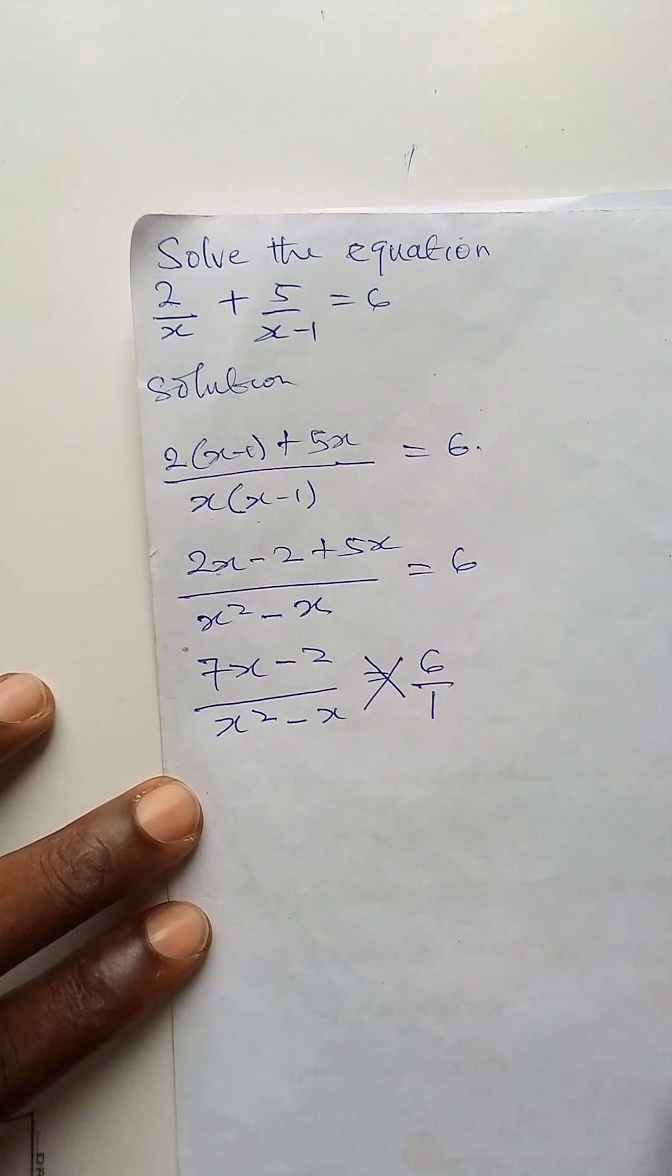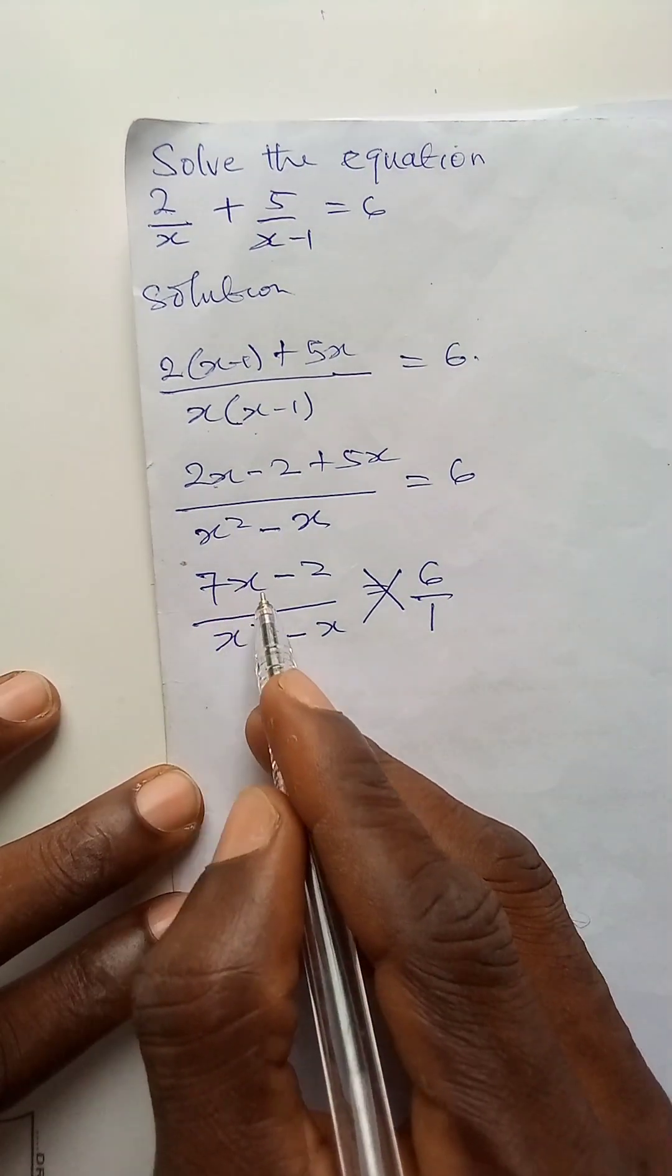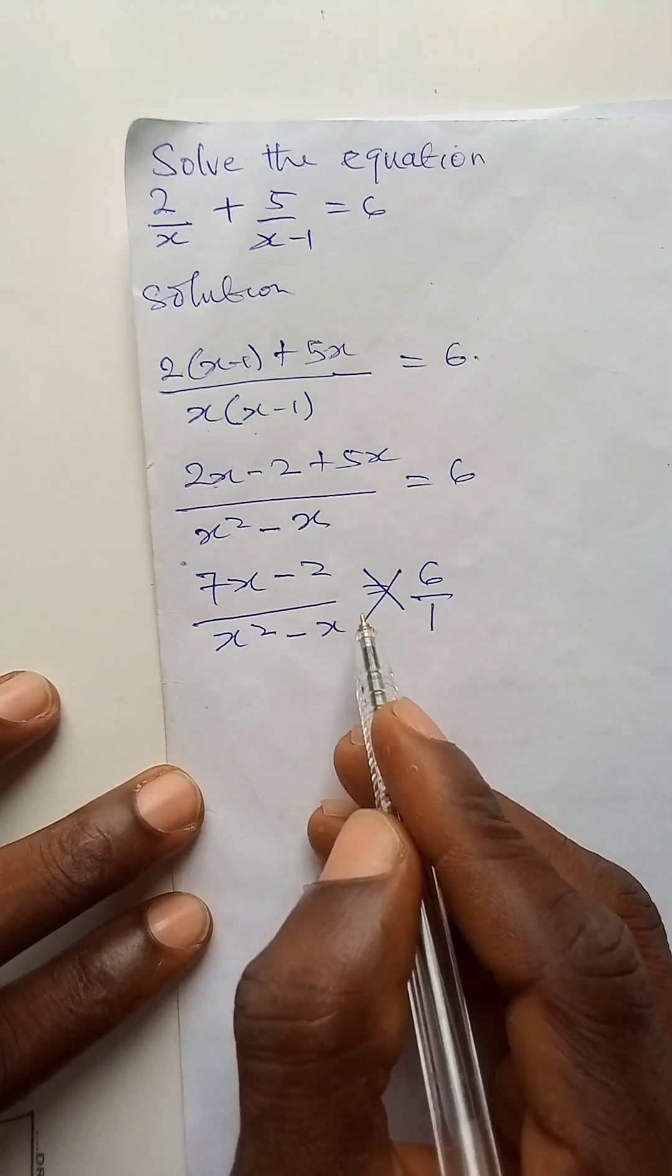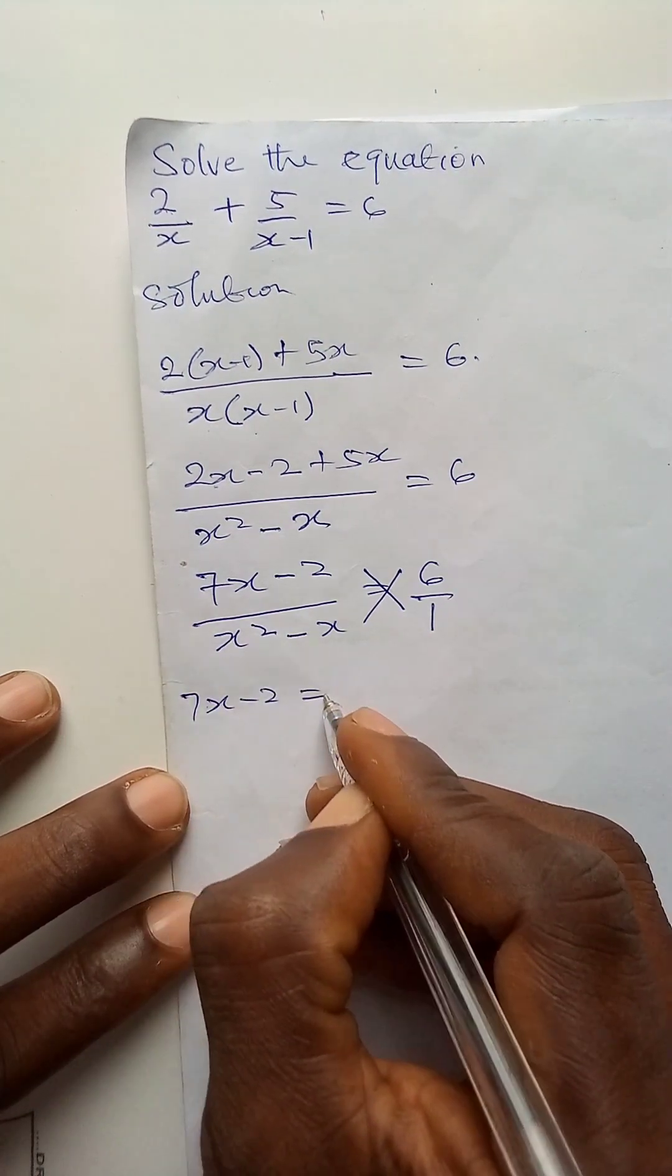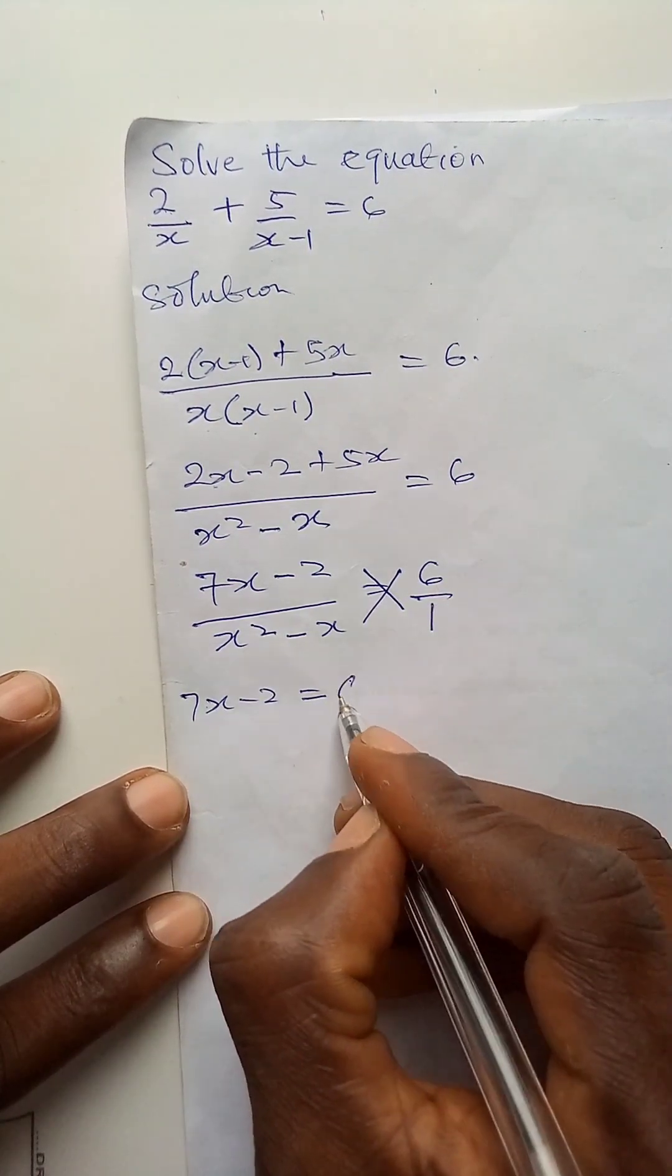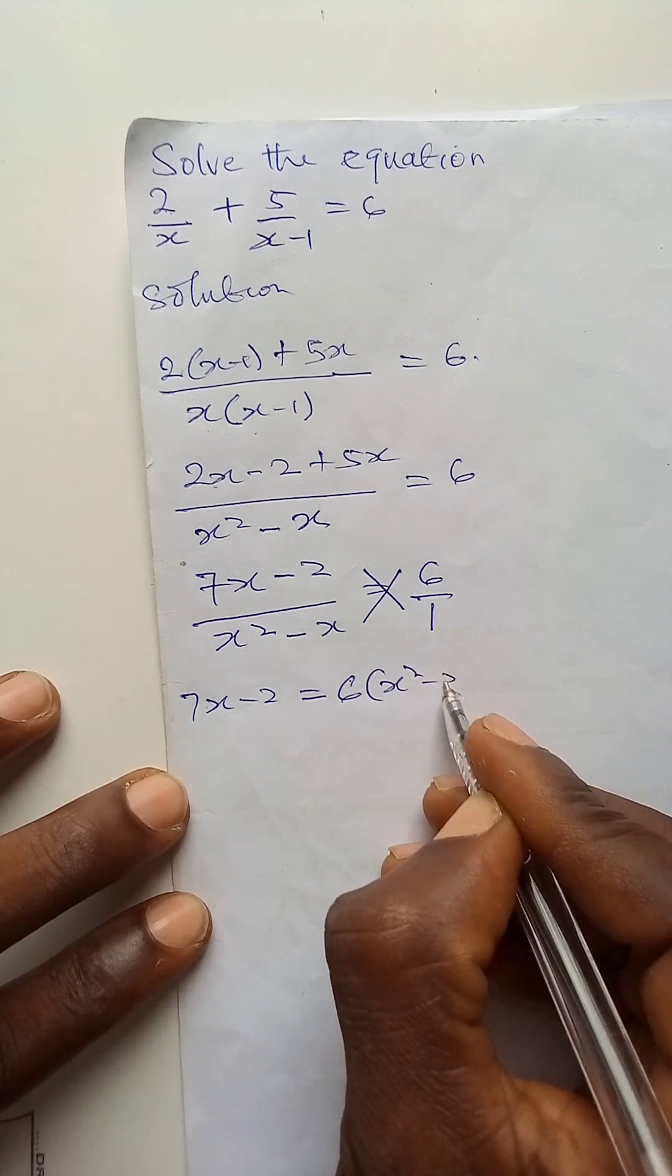I will put over 1 here and then cross-multiply. 7x minus 2 times 1 gives us 7x minus 2. Then 6 times x squared minus x.